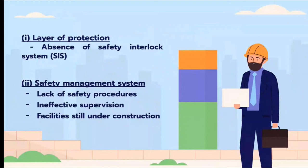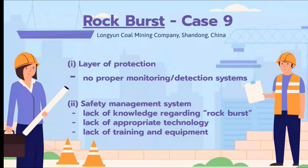I'll now pass the floor to Sim Yepin to continue the presentation. — I will continue with the next part. Case 9 was the collapse of a mine as a result of a rock burst. In terms of layer of protection, there was no proper monitoring or detection system implemented. The safety management system failure was due to lack of knowledge regarding rock bursts, lack of appropriate technology, and lack of training and equipment.